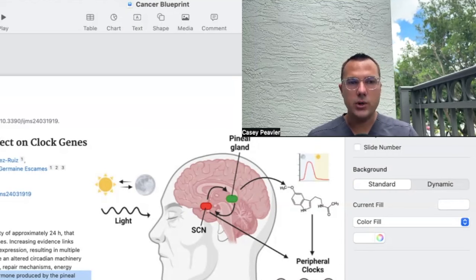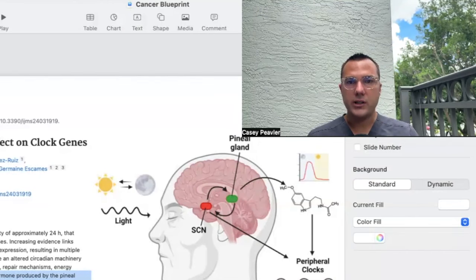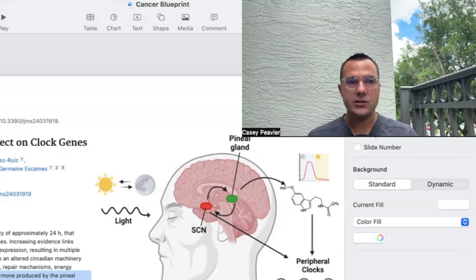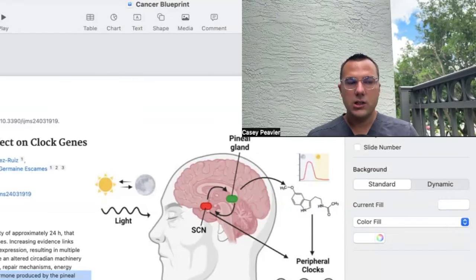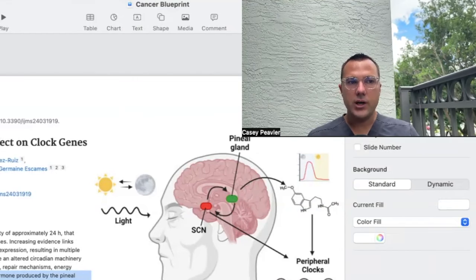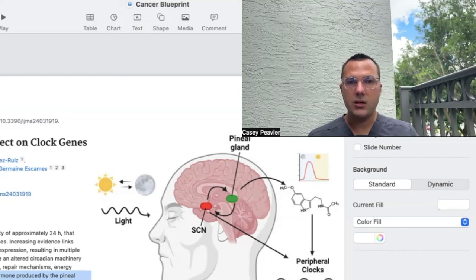In the last video, we left off discussing melatonin's important roles for affecting not only the central clock, but the peripheral clock and the peripheral clock genes. We left off with the idea that melatonin is only made in the pineal gland, which is a big misconception and has been debunked thoroughly.